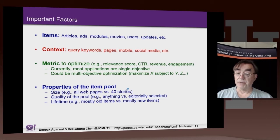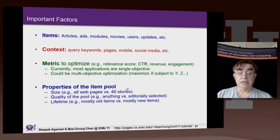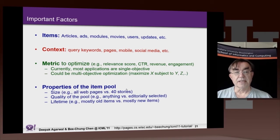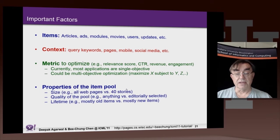Sometimes we have manual intervention — editorially selected material, such as in some web news sites — and other times we have anything goes. I actually do not know whether Google News has any editorial intervention to make certain you always get the top stories, because in the past they sometimes missed the top stories. I don't know whether the fact that I've never seen them miss top stories means they've improved the algorithm, or whether editorial insists that you cannot miss the top stories.